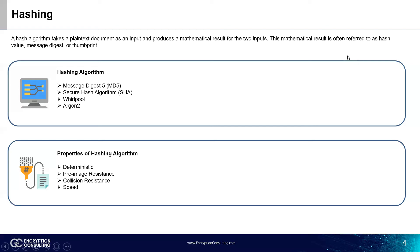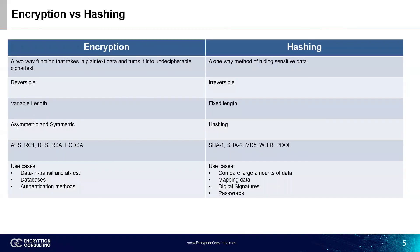Encryption is reversible, whereas hashing is irreversible. The output in encryption has a variable length, whereas in hashing the output has a fixed length, which represents the deterministic property. Encryption can be categorized into two types — symmetric and asymmetric — whereas hashing only has one. Common encryption algorithms include AES, RC4, DES, RSA, and ECDSA, whereas common hashing algorithms are SHA-1, SHA-2, MD5, and Whirlpool.